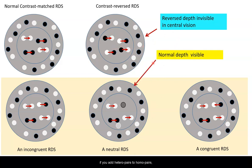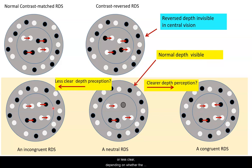we can ask if you add hetero pairs to homo pairs whether they will make the depth perception clearer or less clear depending on whether the hetero pairs are congruent or incongruent.